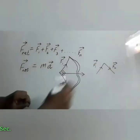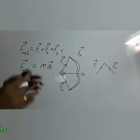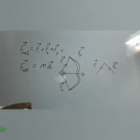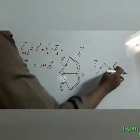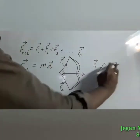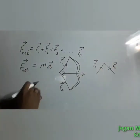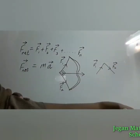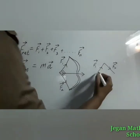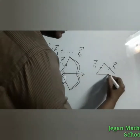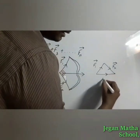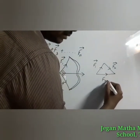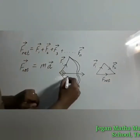I have drawn the components here. For the net force, we use the triangle law of addition of vectors. These are the two sides of the triangle, and the resultant force will be the third side. It acts along that direction — that is where we get the net force, and that's why the arrow moves forward.